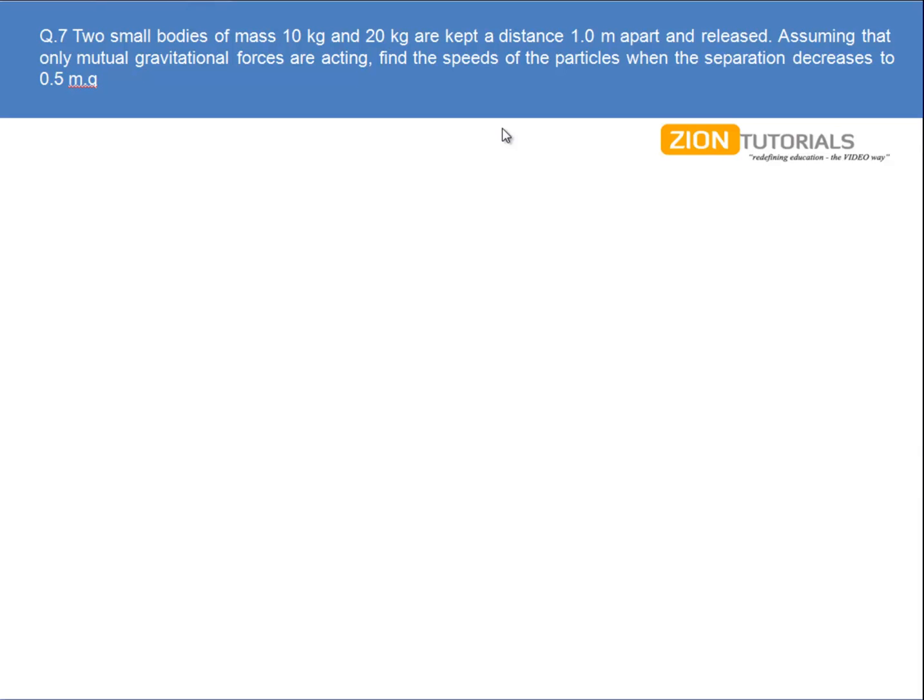Two small bodies of mass 10 kg and 20 kg are kept at a distance 1 meter apart and released. Assuming that only mutual gravitational forces are acting, find the speed of the particles when the separation decreases to 0.5 meter.